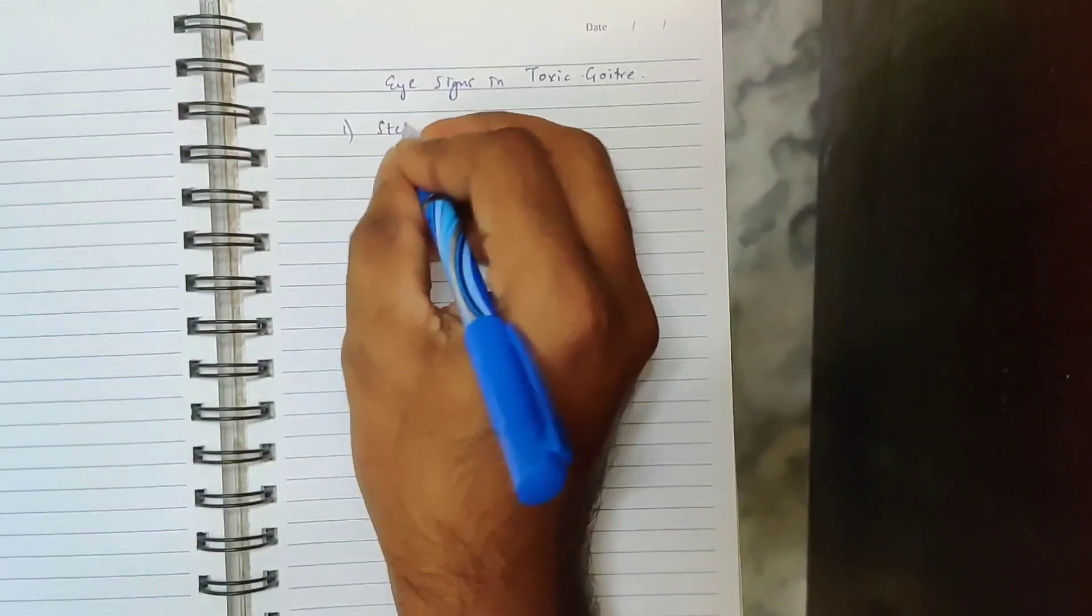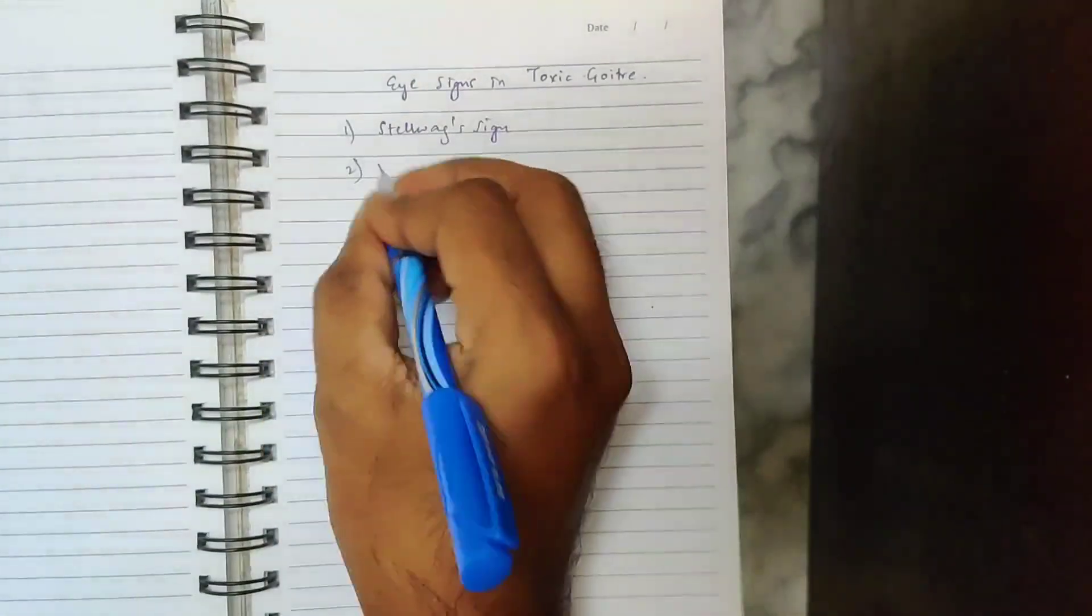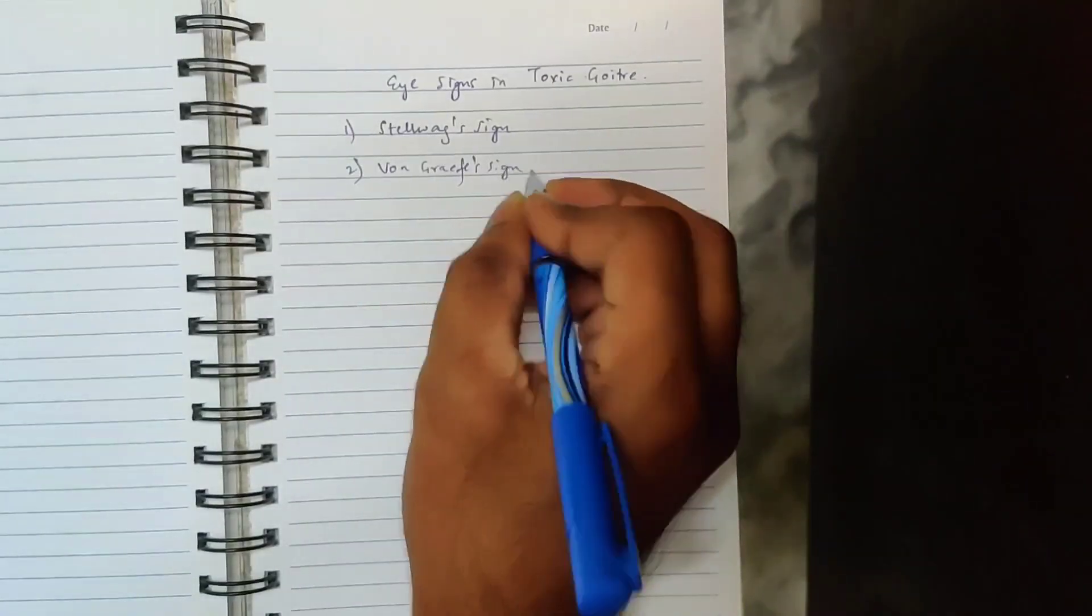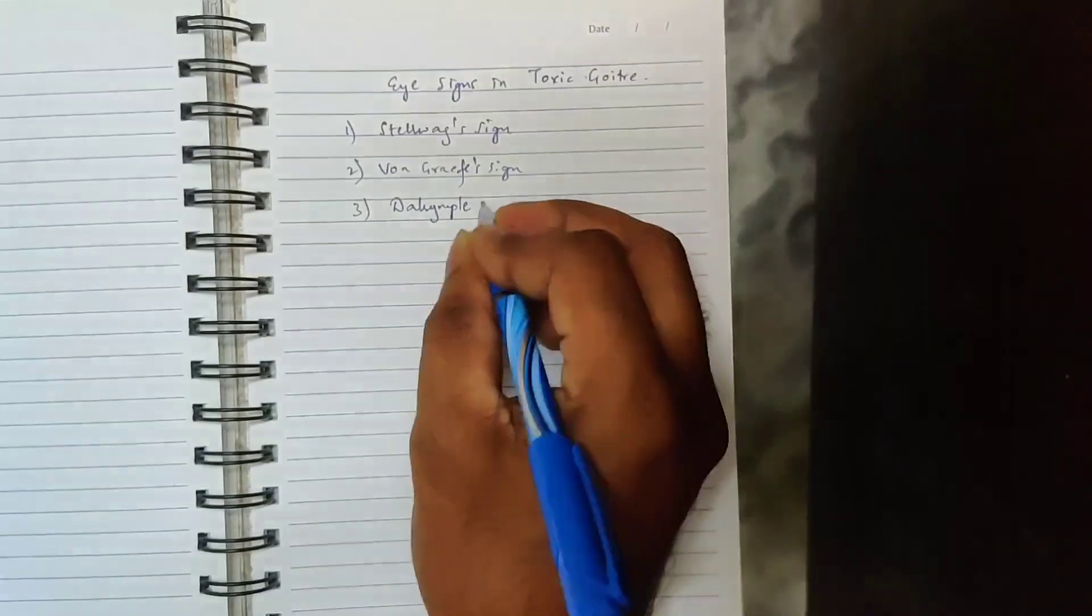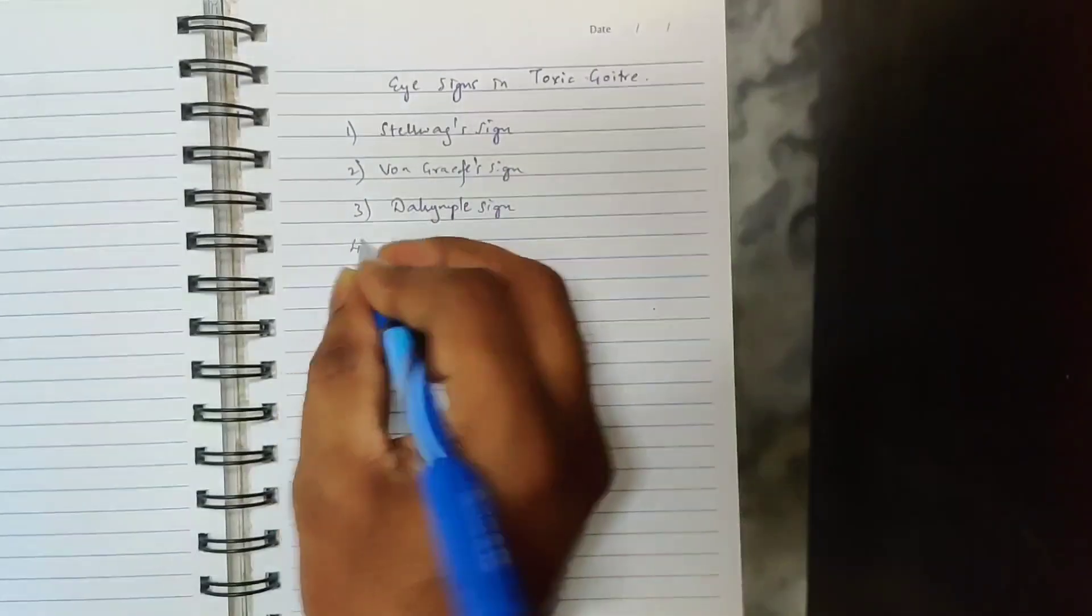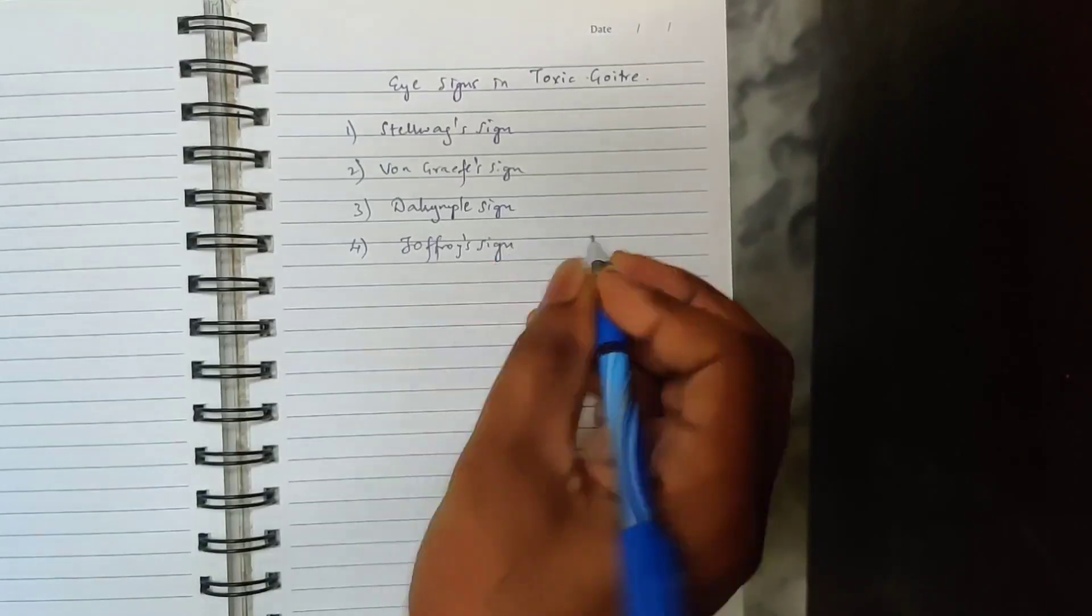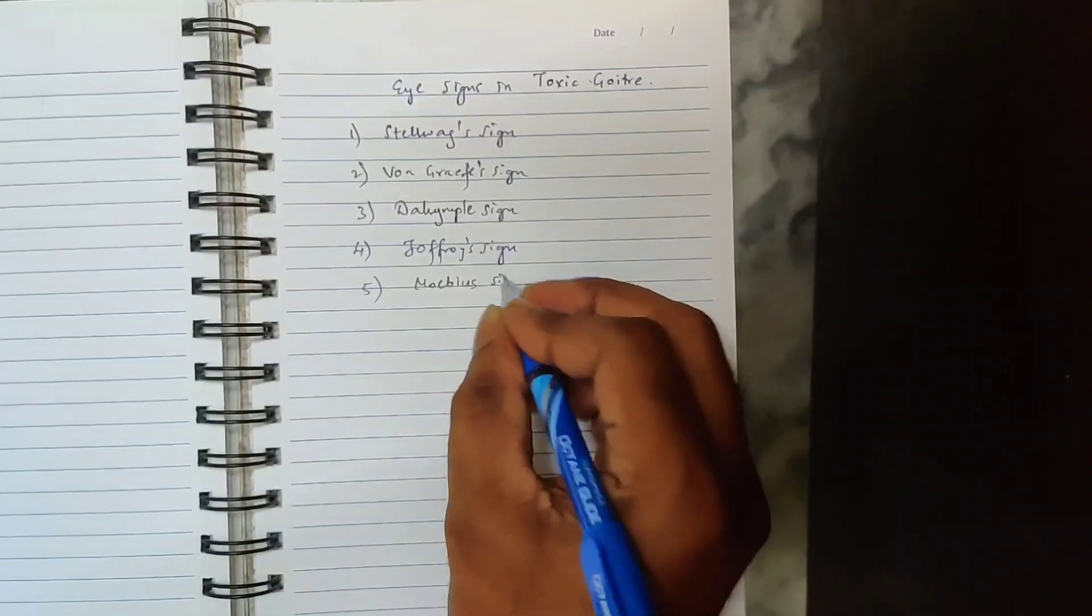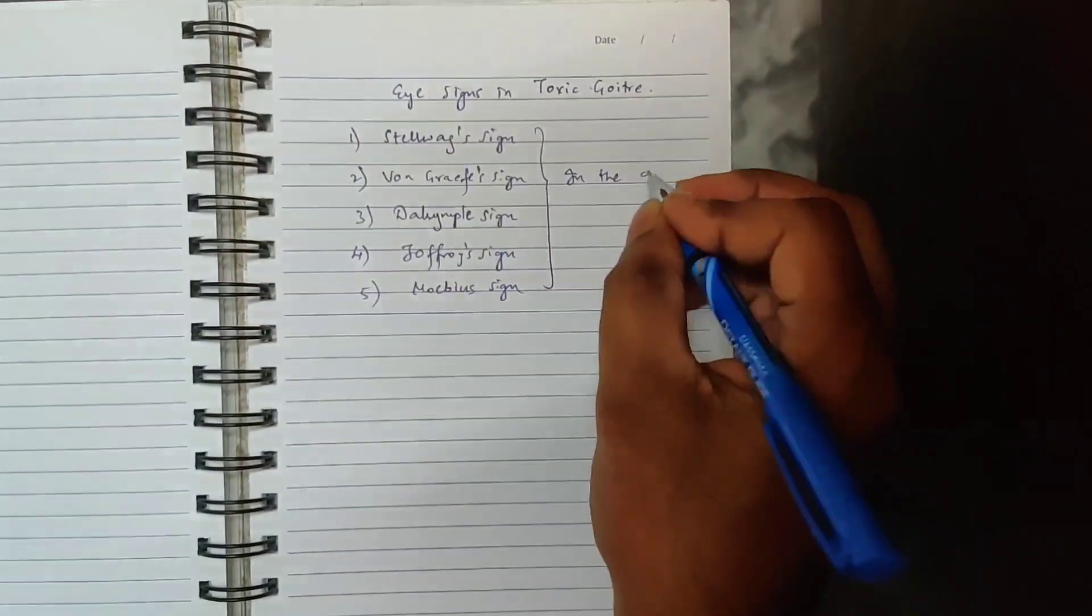They are Stelwag sign, Von Graf sign, Dalrymple sign, Joffroy sign, and Moebius sign. These are in the order of appearance of those signs.